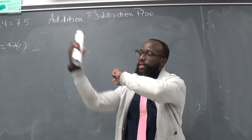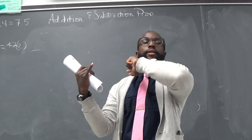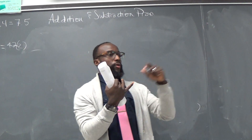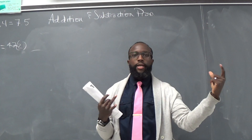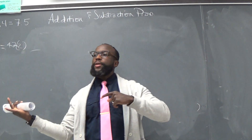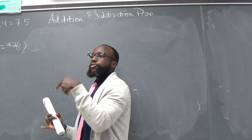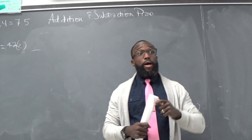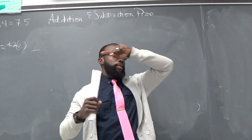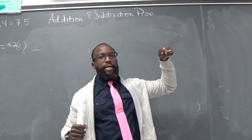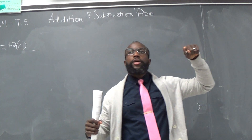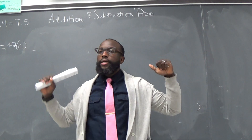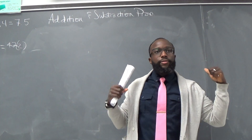So far we've dealt with supplementary angles being two angles that equal 180 degrees, complementary angles are two angles that equal 90 degrees. We talked about perpendicular lines forming 90 degree angles. We talked about congruent segments.